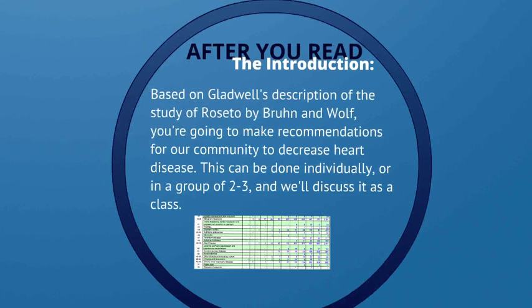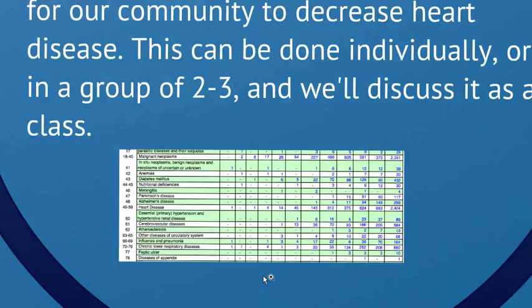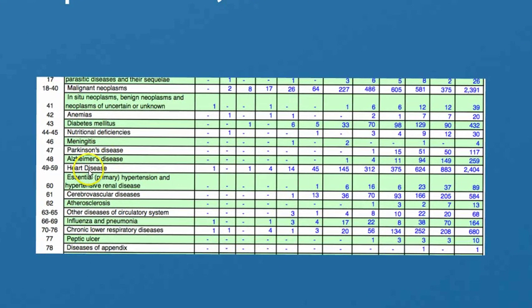After you read the introduction, we're going to come together and do an activity. Based on Gladwell's description of the study of Rosetto by Bruin and Wolf, you're going to be asked to make recommendations for our community to decrease heart disease. You can work on this individually or in a group of two to three, and we'll discuss it more as a class. The reason we're doing this is because in our county, the leading cause of death is heart disease. You'll need to figure out how Rosetto beat heart disease and make recommendations based on that for what we can do as a community.